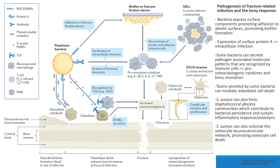This slide provides an overview of the pathophysiology for how infections affect the bony response, taken from Moriarty et al. in Nature Reviews from 2022. In summary, bacteria have several mechanisms for disrupting the normal healing response and establishing infection. Some can express surface components that promote adhesion to abiotic surfaces, promoting biofilm formation — for example on the fixation device. Some can express things like surface protein A, which can facilitate intracellular infection into host cells. Some bacteria can also secrete pathogen-associated molecular patterns, or PAMPs, that are recognized by immune cells and stimulate a pro-osteoclastogenic cytokine response as well as bony resorption.